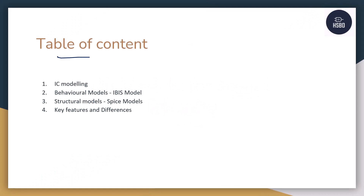This is the table of content. In the first topic we are going to discuss about IC modeling — why we need IC modeling and what type of IC modeling is used for the transmitter as well as the receiver. We have two types of models: behavioral models and structural models. After that I will take you through the key features and differences between both models, including IBIS and SPICE models, and where an SI engineer is supposed to use which kind of model.